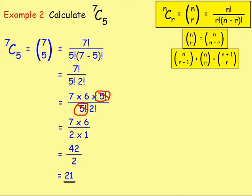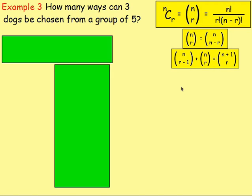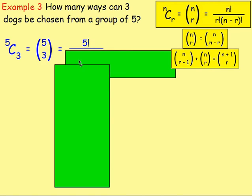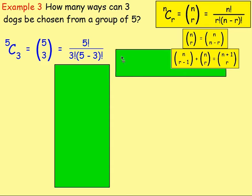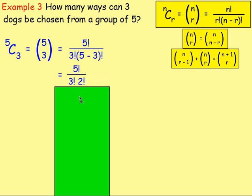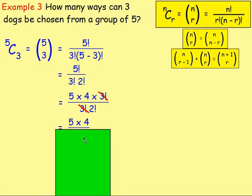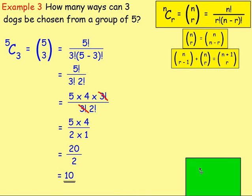Example three: how many ways can three dogs be chosen from a group of five? The group number is five and we want to choose three, so we write 5 choose 3. Using the formula: five factorial over three factorial times (five minus three) factorial. Five minus three is two, so five factorial becomes five times four times three factorial — cancel the three factorials — leaving five times four on top and two factorial on the bottom: 20 divided by two equals 10.